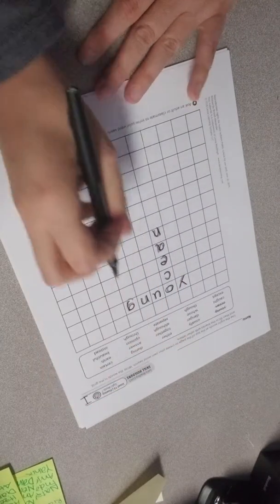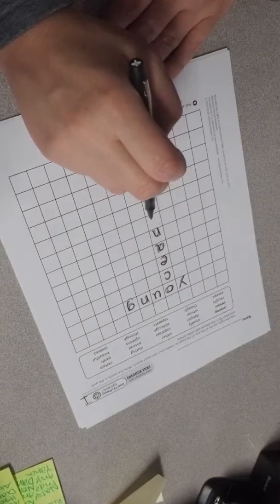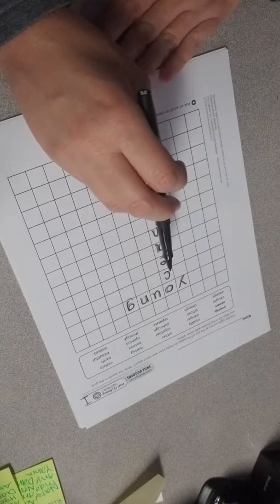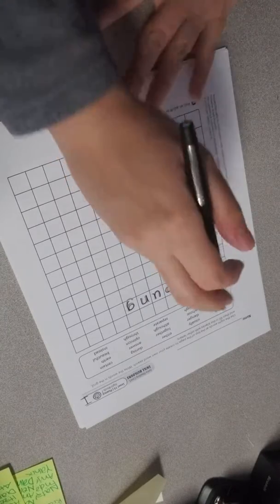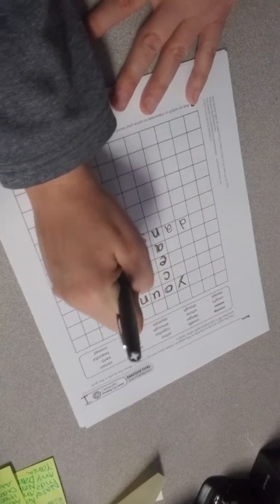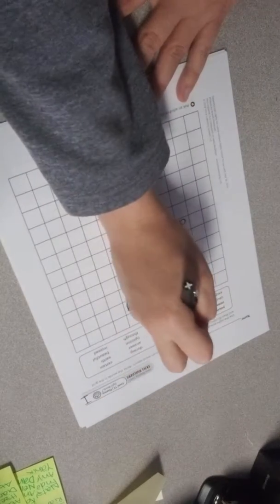So then what I would do next is find one that maybe starts with or has in it an N. So I know that danger has an N in it. So I'm going to connect danger and then I'm going to cross it out.